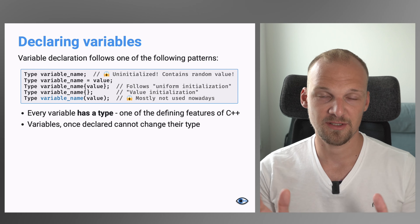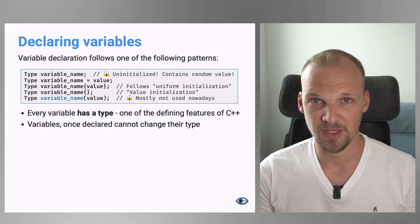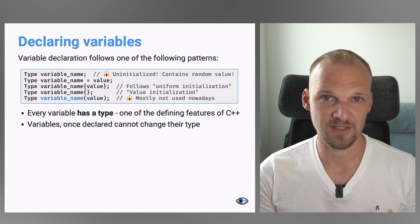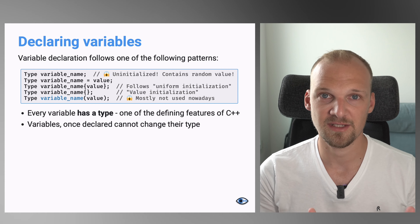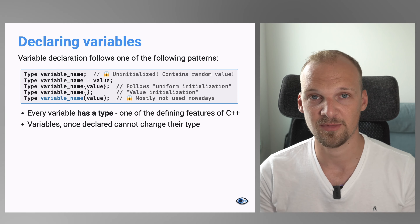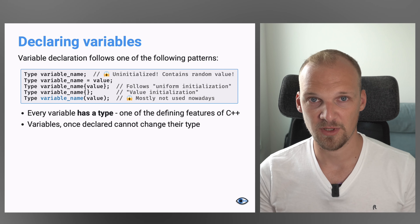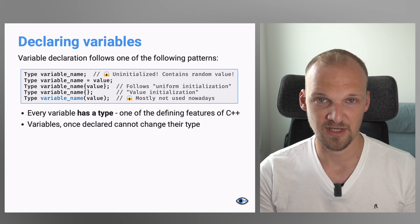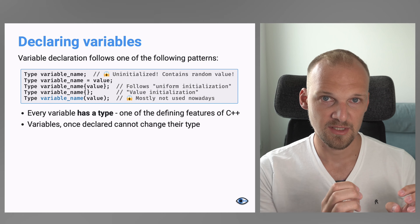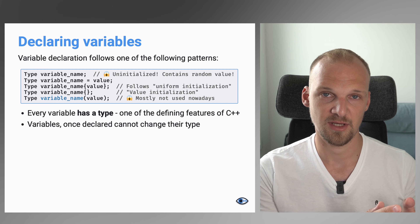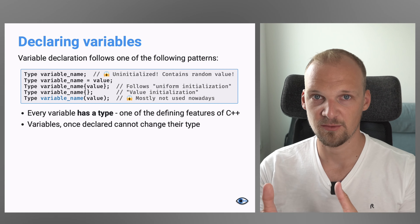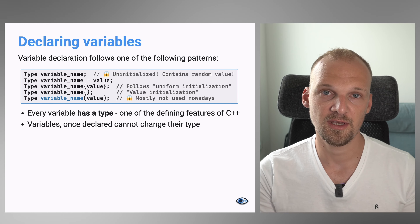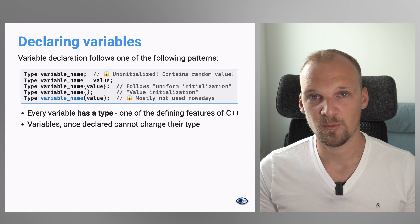To create a variable in C++, you need to provide it a type. C++ is a strongly typed language, so every variable has a type and that type cannot change. Whatever you assign to a variable afterwards must be of the same type — otherwise it will either be converted to that type or the code simply won't compile.